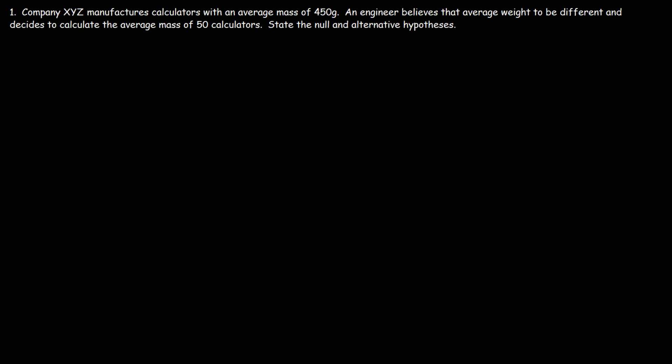So let's start with this problem. Number one: company XYZ manufactures calculators with an average mass of 450 grams. An engineer believes that average weight to be different and decides to calculate the average mass of 50 calculators. State the null and alternative hypotheses.